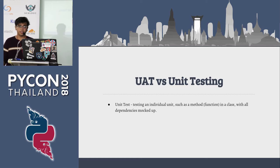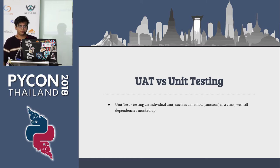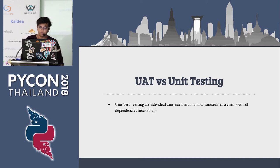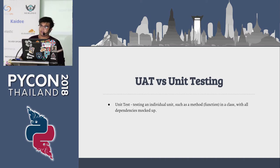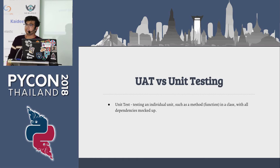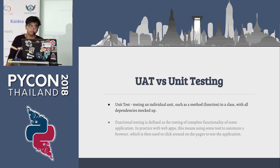There's a difference between UAT, acceptance testing, and unit testing. Unit testing is testing of the individual unit — you write code, write a method in a class, and test if it works. Sometimes you use mock functions, and there are different libraries for that.